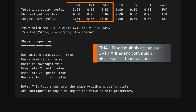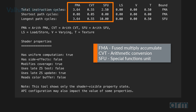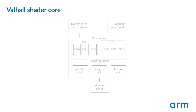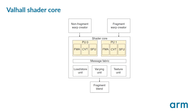Arithmetic cost for Valhall-based GPUs is now shown broken down by FMA, CVT and SFU pipelines. All Valhall GPUs implement two parallel processing engines, each containing their own set of arithmetic pipelines.